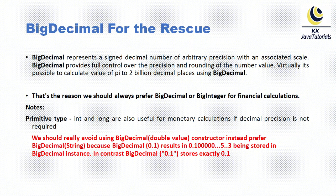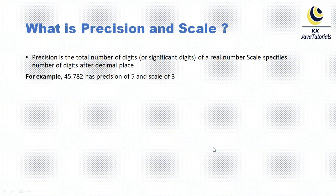Here you can see BigDecimal with "0.1" which is basically accepting a String data type, so this will store exactly 0.1. If you try to use a BigDecimal constructor which accepts 0.1 as a double, then in memory that will be represented as something inaccurate. Now, when dealing with monetary amounts, you should know what precision and scale are. Precision is the total number of significant digits of the real number. Scale specifies the number of digits after the decimal point. For example, 45.782 has a precision of 5 and a scale of 3.